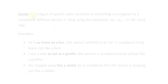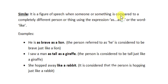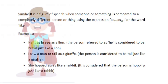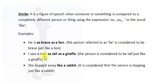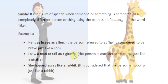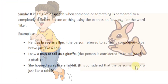Simile. It is a figure of speech when someone or something is compared to a completely different person or thing using the expression 'as...as' or the word 'like.' Examples: 'He is as brave as a lion' — the person referred to as 'he' is considered to be brave just like a lion. 'I saw a man as tall as a giraffe' — the person is considered to be tall just like a giraffe. 'She hopped like a rabbit' — the person is considered to be hopping just like a rabbit.